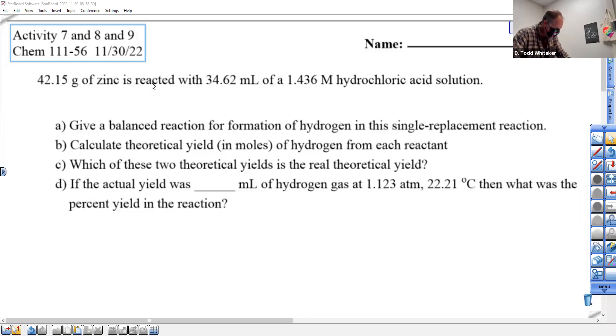So 42.15 grams of zinc is reacted with this much milliliters of a 1.436 molar hydrochloric acid solution. Uh-oh, what's hydrochloric acid? HCl, we have to know that, people.